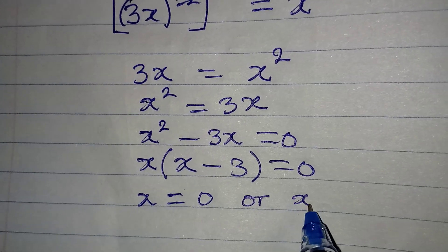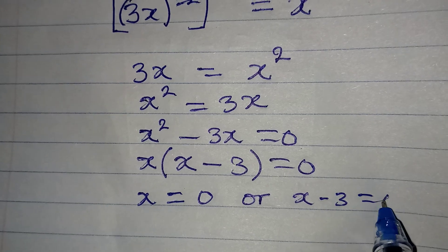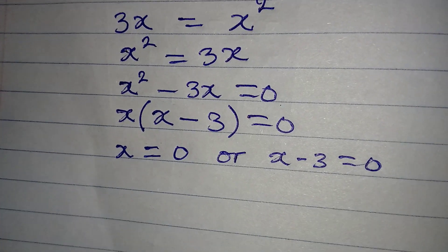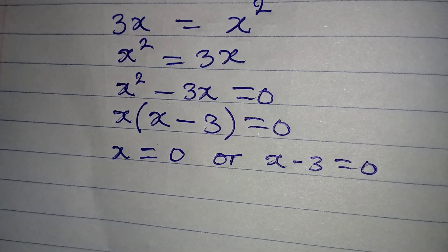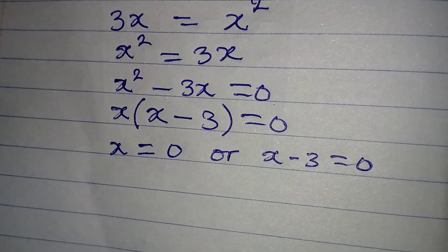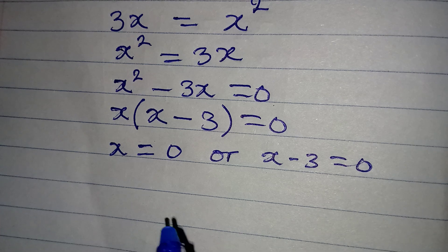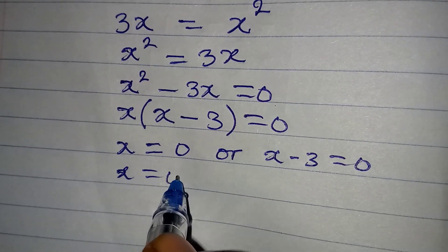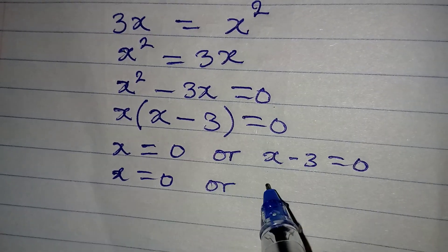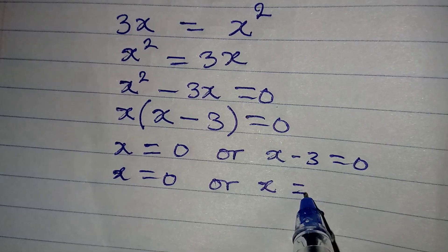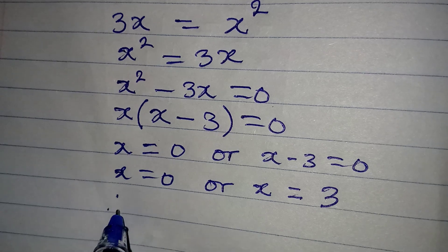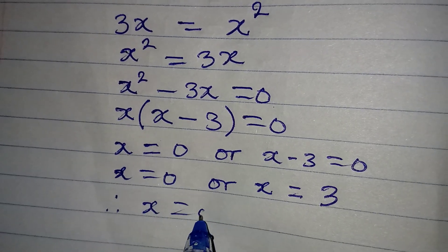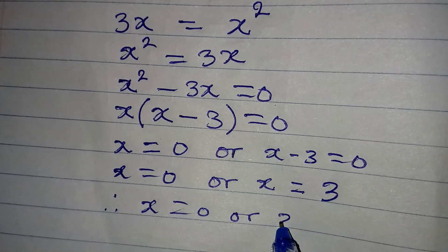So that's from here, x is either equal to 0 or x - 3 is equal to 0, because I need to apply zero product rule. And then if we continue, then we have x to be equal to 0 or x to be equal to 3. Therefore we have x to be 0 or 3.